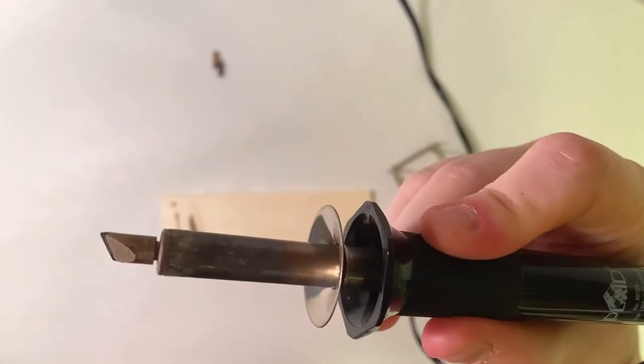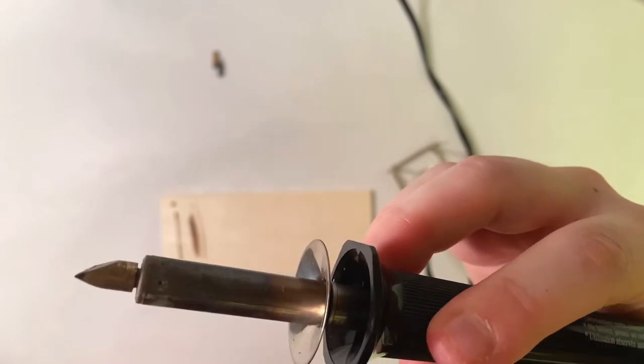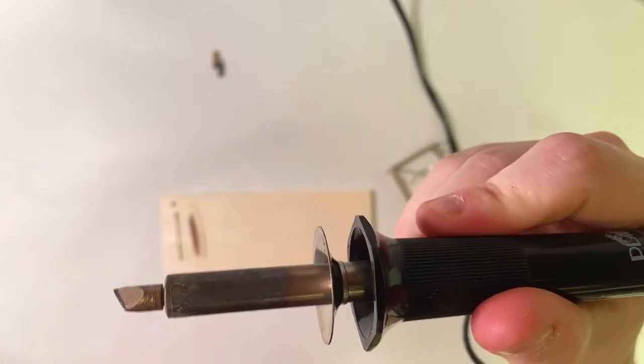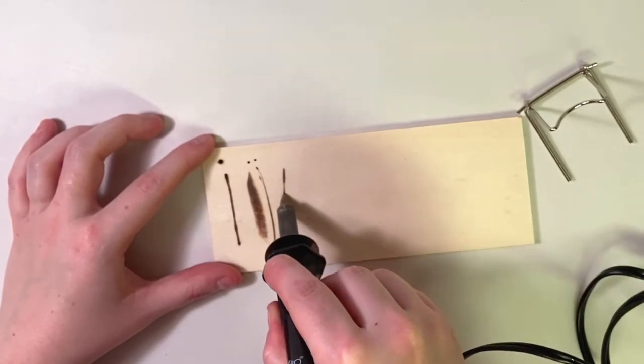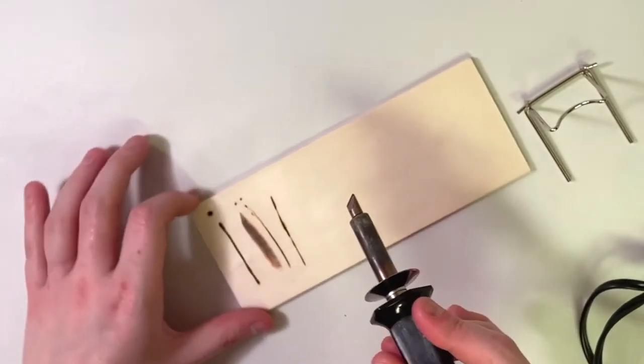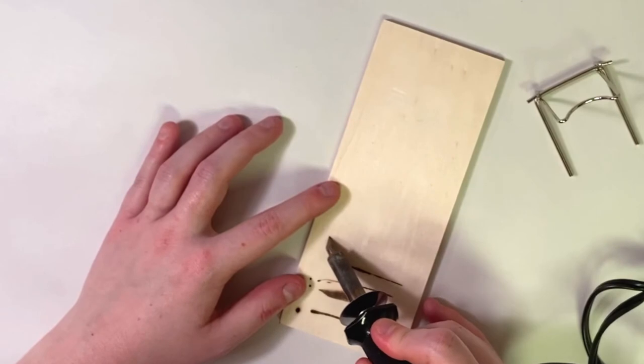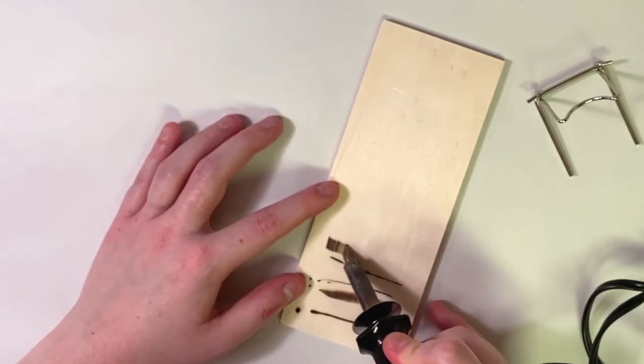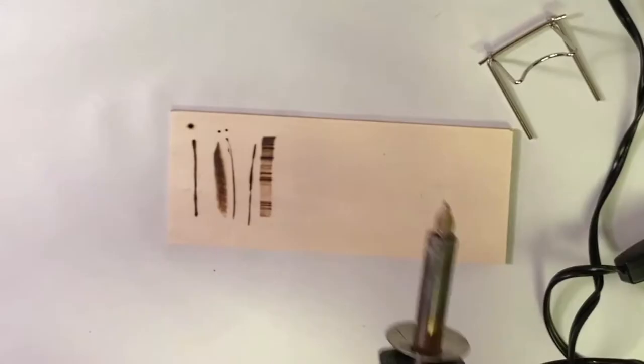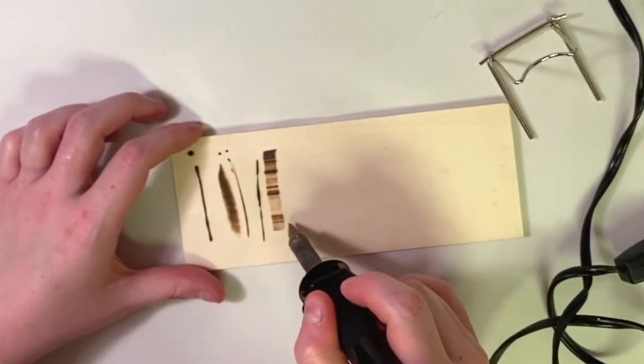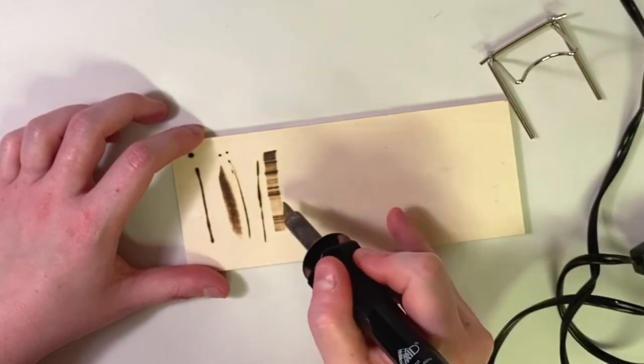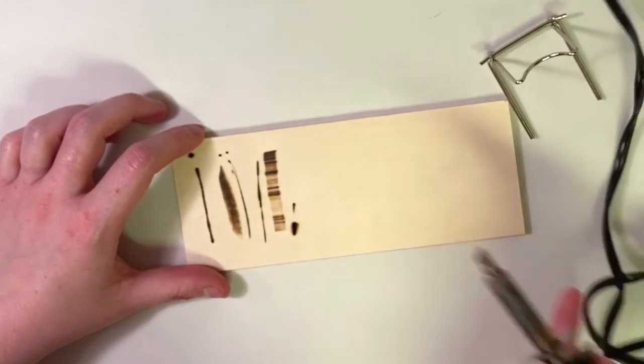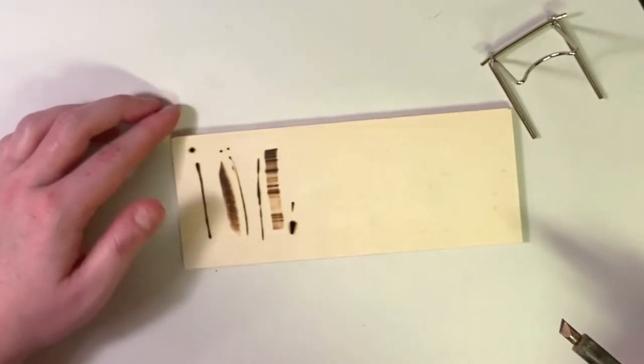This next one is sort of like a wedge. So you can see it gets real thin at the top and thicker at the bottom. This one's good for really thin lines. Or if you turn it sideways, it's also good for thicker lines. You can hold it for longer to get a deeper burn and get a thicker line. And then if you hold it for shorter, you get a thinner, less thick line.